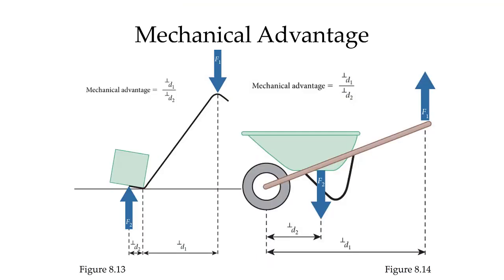Let's look at two common everyday devices that use mechanical advantage. On the left-hand side we have a crowbar. You apply a force at F1, and the perpendicular distance from that force to the pivot point is D1. The output force from the crowbar is F2, and its perpendicular distance is D2. Note that the larger D1 compared to D2 means we have a mechanical advantage — the force put into the crowbar is amplified to the force we get out.